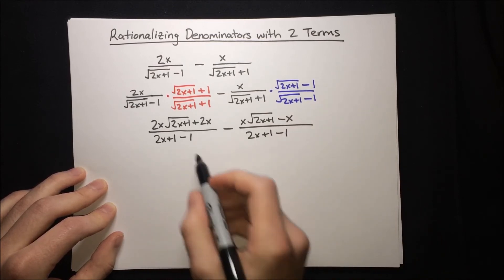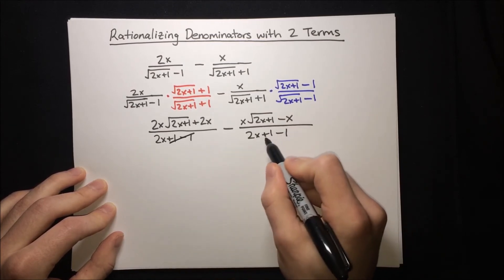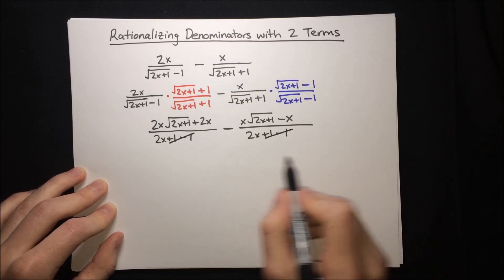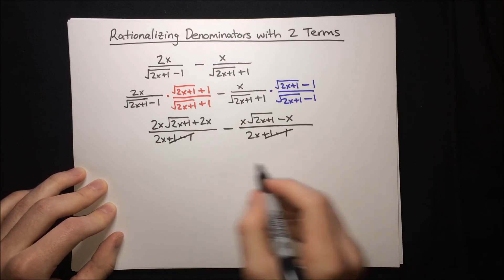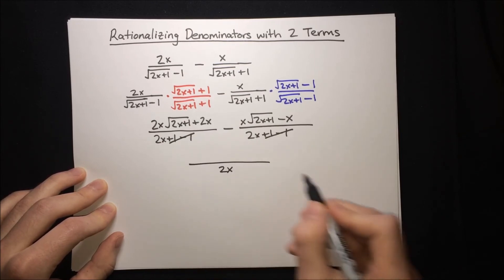Right off the bat, we see that plus 1 minus 1 cancels, so let's get rid of that. And then since these fractions have the same denominator, we can just go ahead and subtract them. So everything is going to be over 2x now.